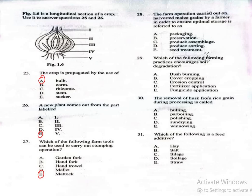Question 28. The farm operation carried out on harvested maize grains by a farmer in order to ensure optimal storage is referred to as: A. Packaging, B. Preservation, C. Produce assemblage, D. Produce sorting, E. Seed treatment. The correct answer is Seed treatment, which is option E. Seed treatment helps in preserving seeds and protecting them from pests, diseases, and poor storage conditions.